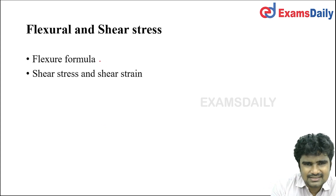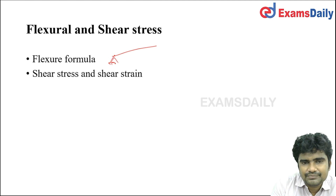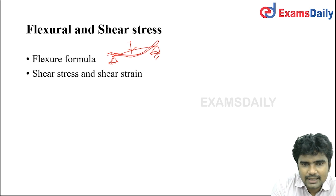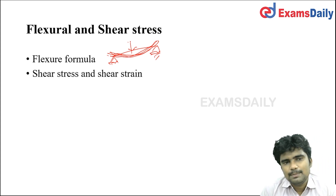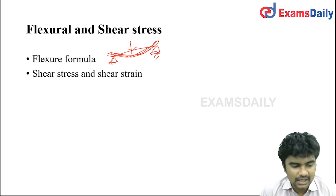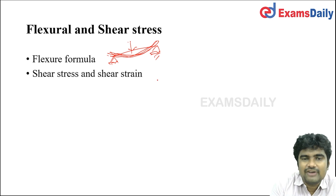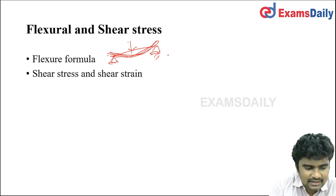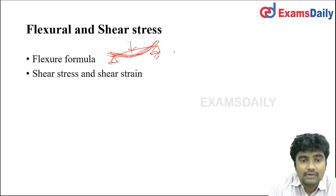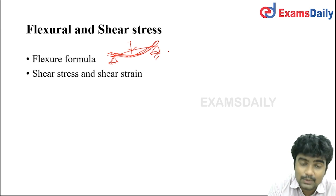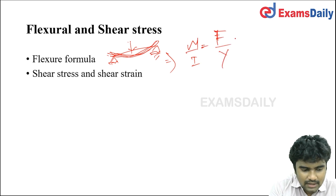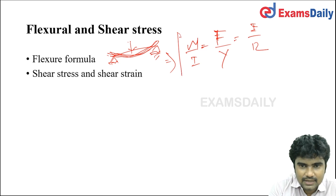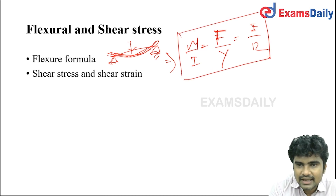When a beam is subjected to a load, it starts bending. In the bending behavior, we use the bending equation, which is also called the flexural equation. The flexural formula is M/I = f/y = E/R. This bending equation allows us to determine any parameter related to the flexural behavior of a member, such as elastic modulus, rigidity modulus, or moment.